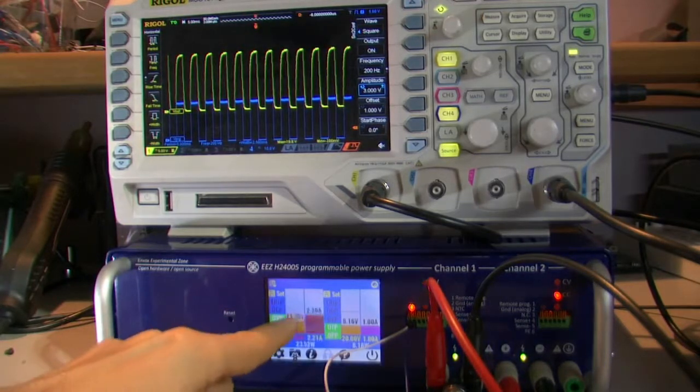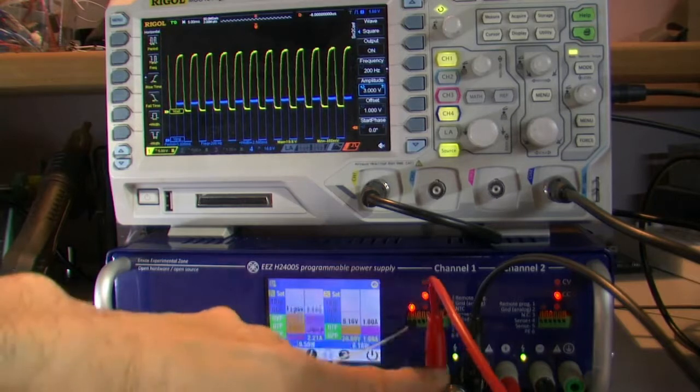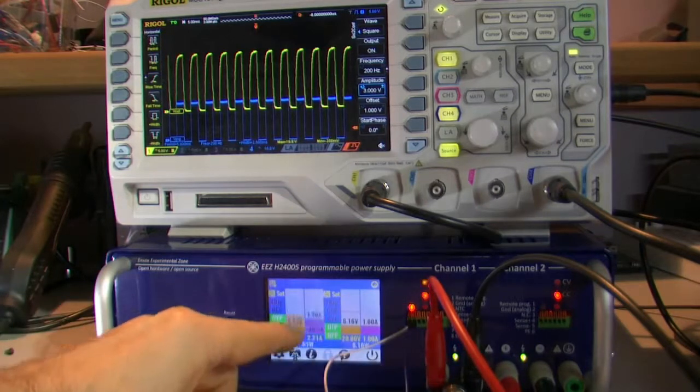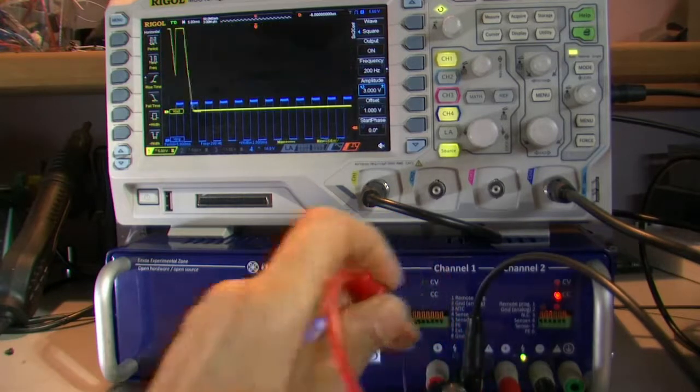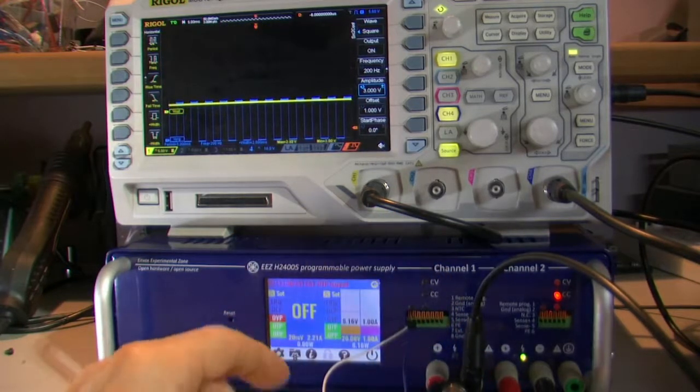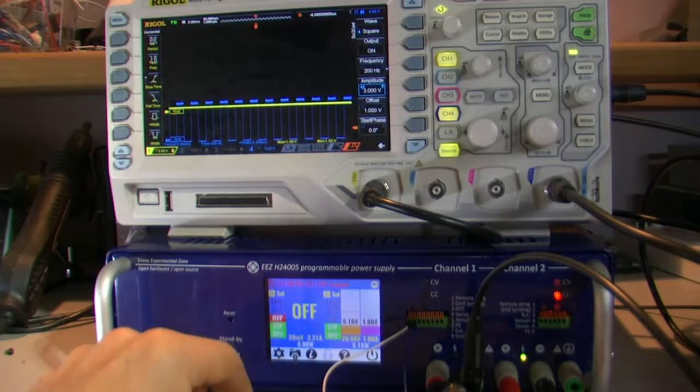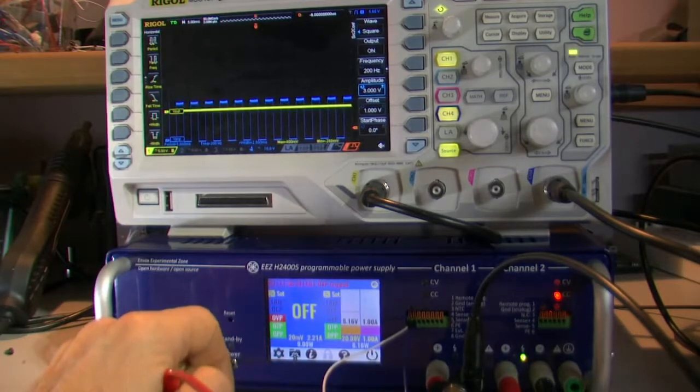We're still in a safe range because of the connected load and current limit. But when I remove this load, we get something like this. The overvoltage protection is tripped.